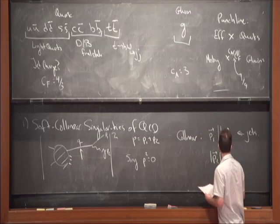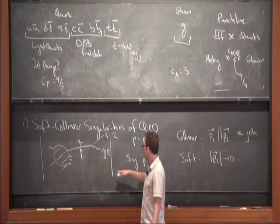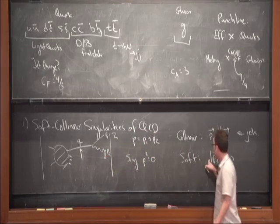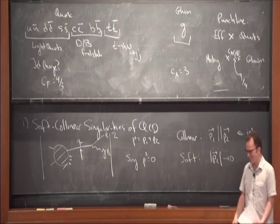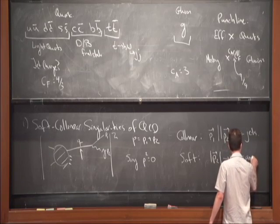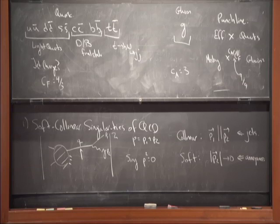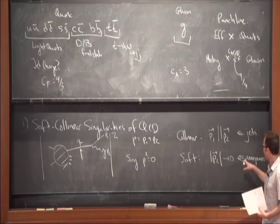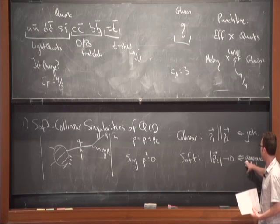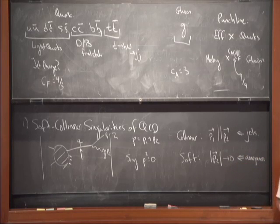Softness doesn't tell you jets will form — it just says radiation wants to be soft, not necessarily collimated. While collinear singularities give me jets, soft singularities just give me annoyance: radiation thrown off at wide angles, not necessarily within any radius of the initial partons. In some sense, a lot of the complications of jets come from precisely this soft structure. Collinear physics tells me jets form; soft physics tells me why jets are hard to study.